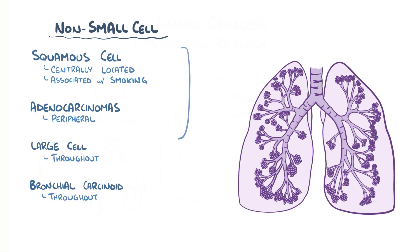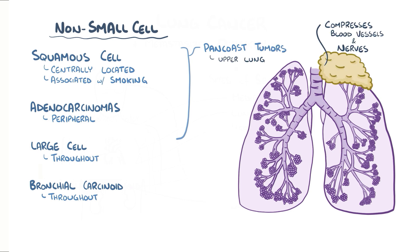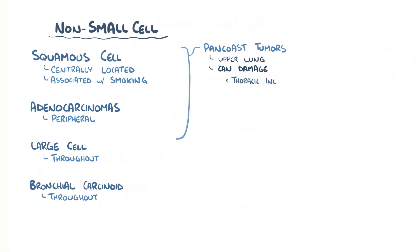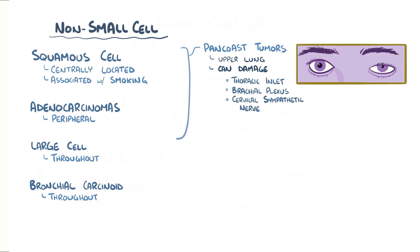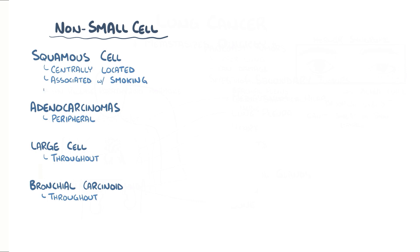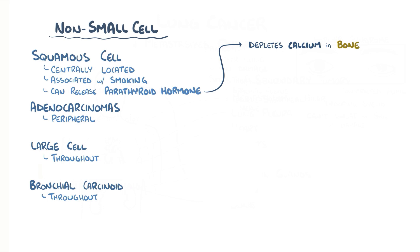Both adenocarcinoma and squamous cell carcinoma can form Pancoast tumors, which are masses in the upper region of the lung that compress the blood vessels and nerves located there. In particular, Pancoast tumors can compress and damage the thoracic inlet, the brachial plexus, and cervical sympathetic nerves, leading to their dysfunction in Horner syndrome. Clinical symptoms of Horner syndrome include a constricted pupil, a drooping upper eyelid, and loss of ability to sweat on the same side of the body as the dysfunctional sympathetic nerve. A classic paraneoplastic syndrome associated with squamous cell carcinoma is the release of parathyroid hormone, which depletes calcium from the bones, causing them to become brittle, and increases calcium levels in the blood.